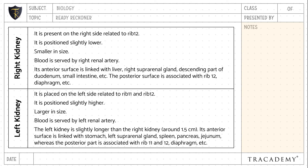The left kidney is slightly longer than the right kidney, by around 1.5 centimeters. Its anterior surface is linked with the stomach, left suprarenal gland, spleen, pancreas, and jejunum, whereas the posterior part is associated with rib 11 and 12, the diaphragm, etc.